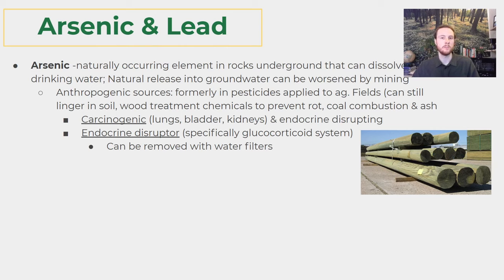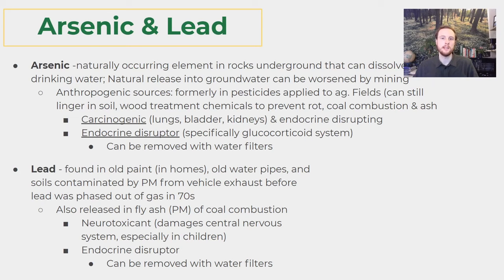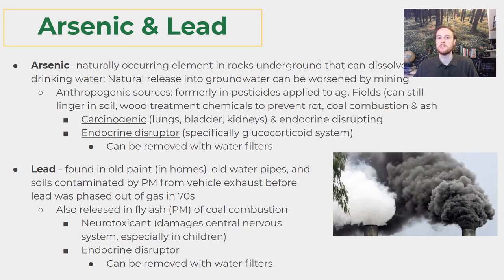The last of the three heavy metal endocrine disruptors we'll talk about today is lead. Lead can be found in old paint in homes prior to its phase-out, and in water pipes built of lead where it flakes off and enters the water supply. Like mercury and arsenic, lead is also released in particulate matter from coal combustion, where it can be carried by wind and deposited in ecosystems far away. In addition to being an endocrine disruptor, lead is a neurotoxicant — meaning it's an inorganic substance, unlike a neurotoxin which is produced by a living thing — and it can damage the central nervous system.